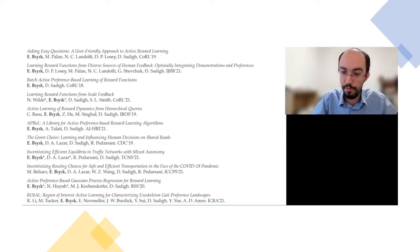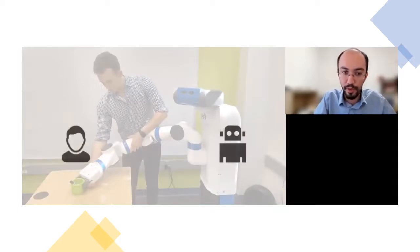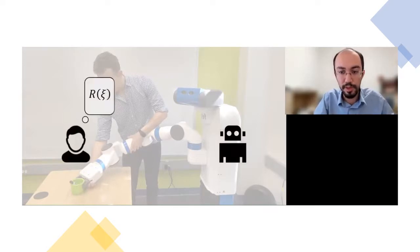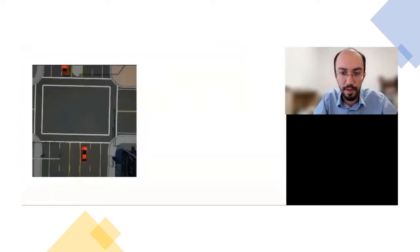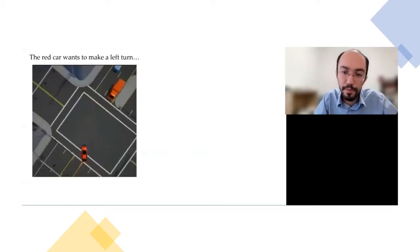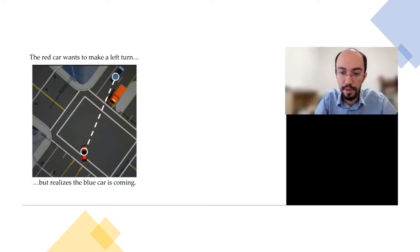In today's talk, I'm going to focus on another work on learning multimodal rewards using comparative feedback. Let's recap the original problem: we have a user with an internal reward function that they want the robot to optimize, but the robot doesn't know this reward function. As an example, consider a red autonomous car making a left turn that then encounters a blue car coming from the opposite direction, previously occluded behind a red truck. Depending on its policy, the autonomous car may make different decisions.